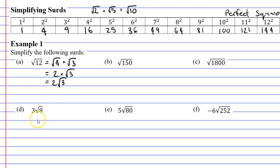Some of you may be wondering how that is simplifying — we've taken a single square root and split it into two numbers multiplied together. When we simplify surds, what we're really focusing on is reducing the number under the radical. Originally we had 12 under the radical and we've reduced it to 3.